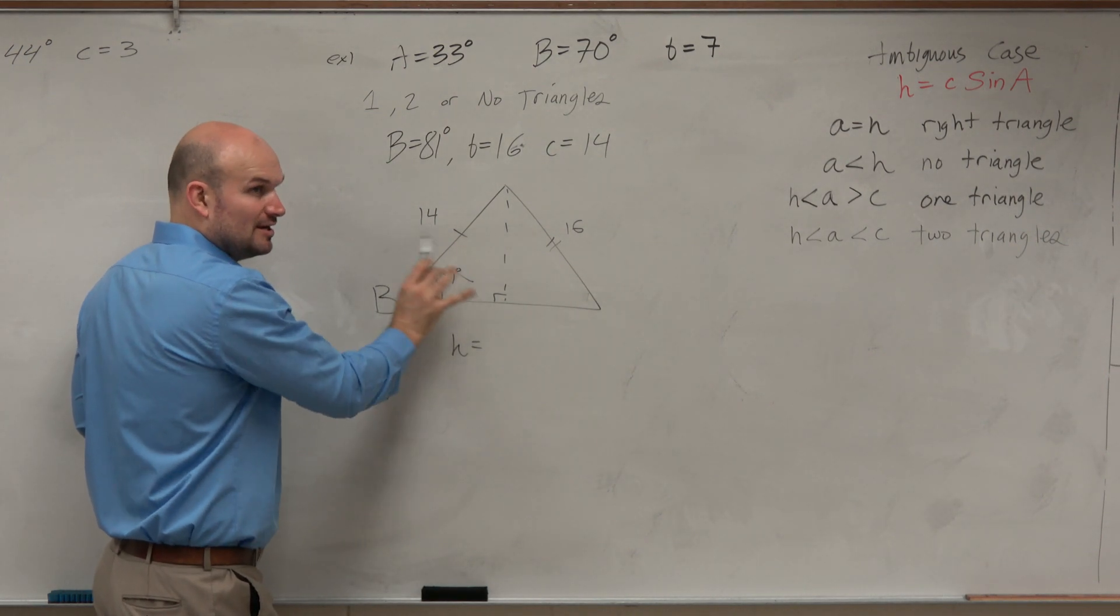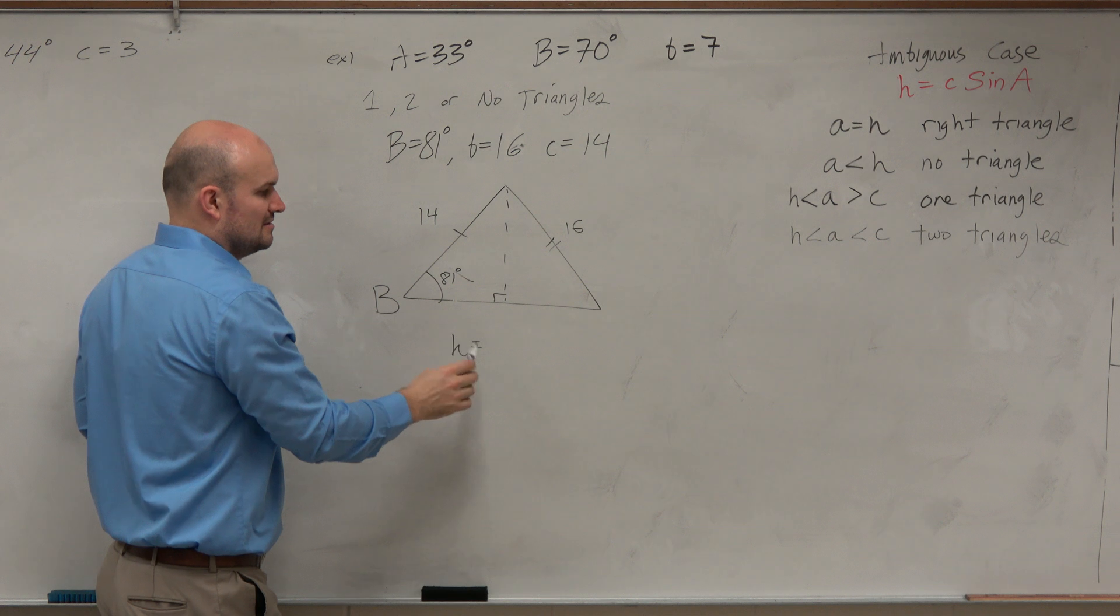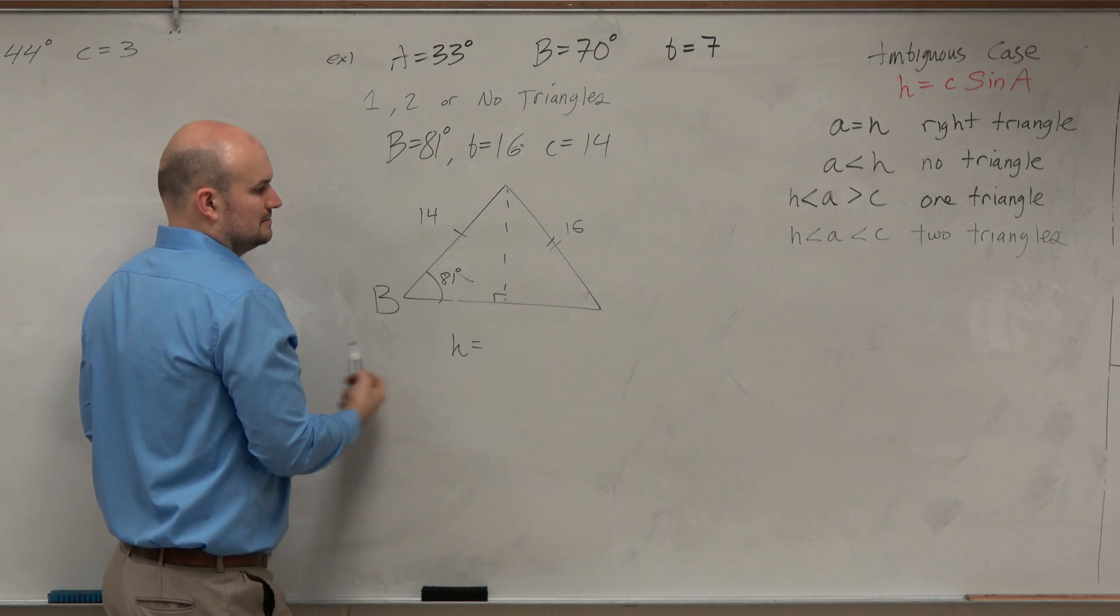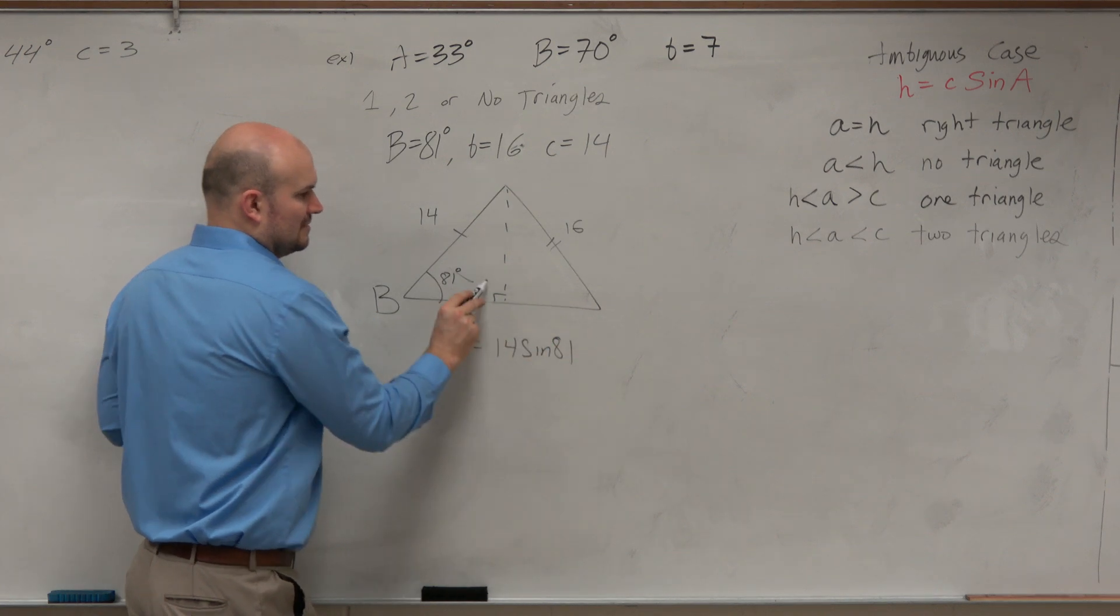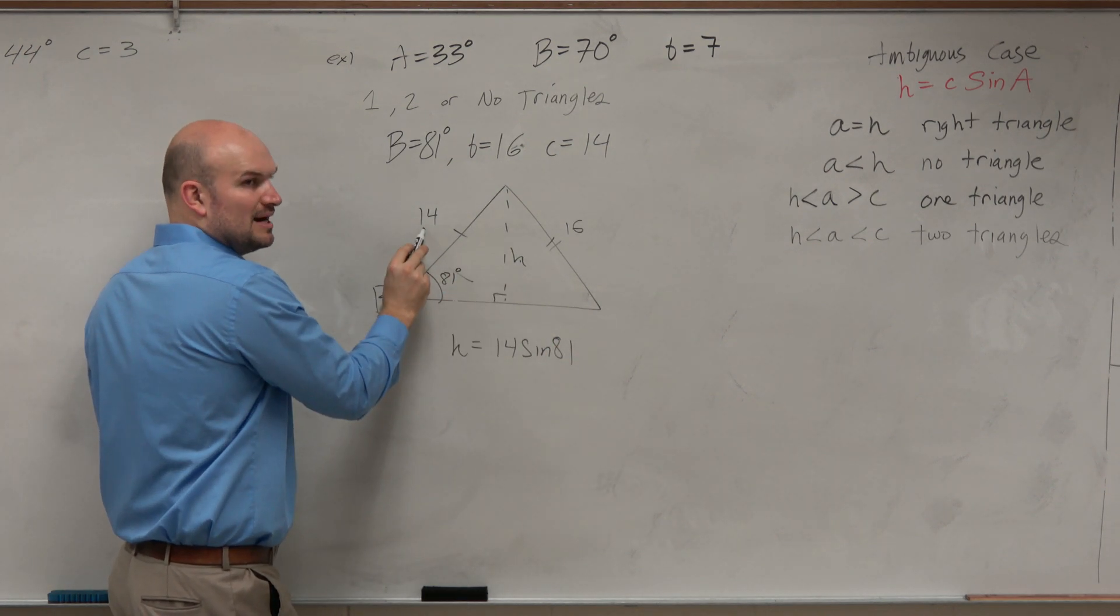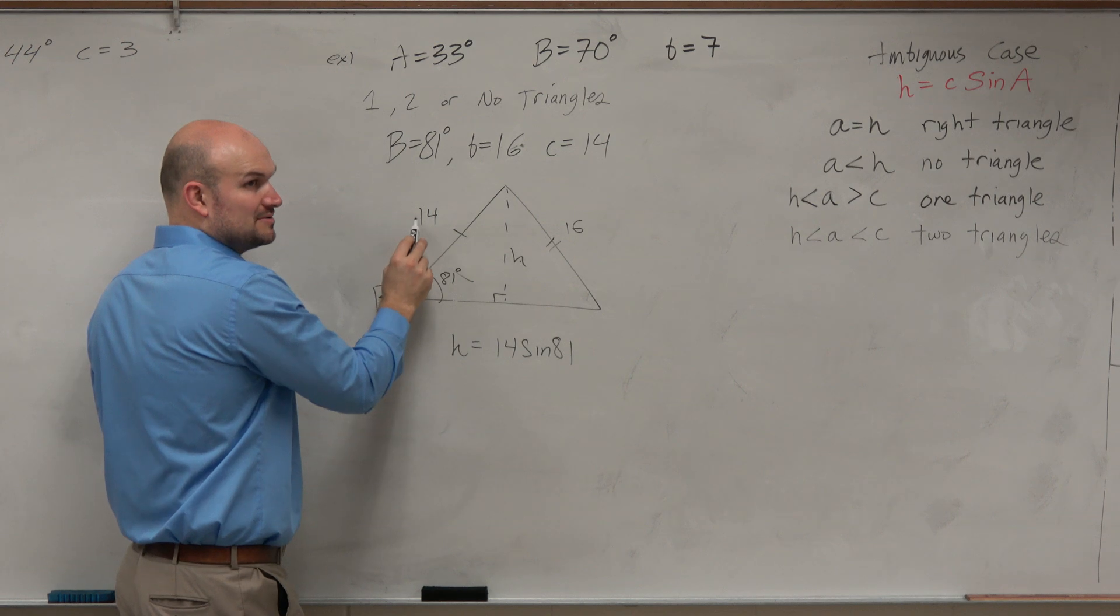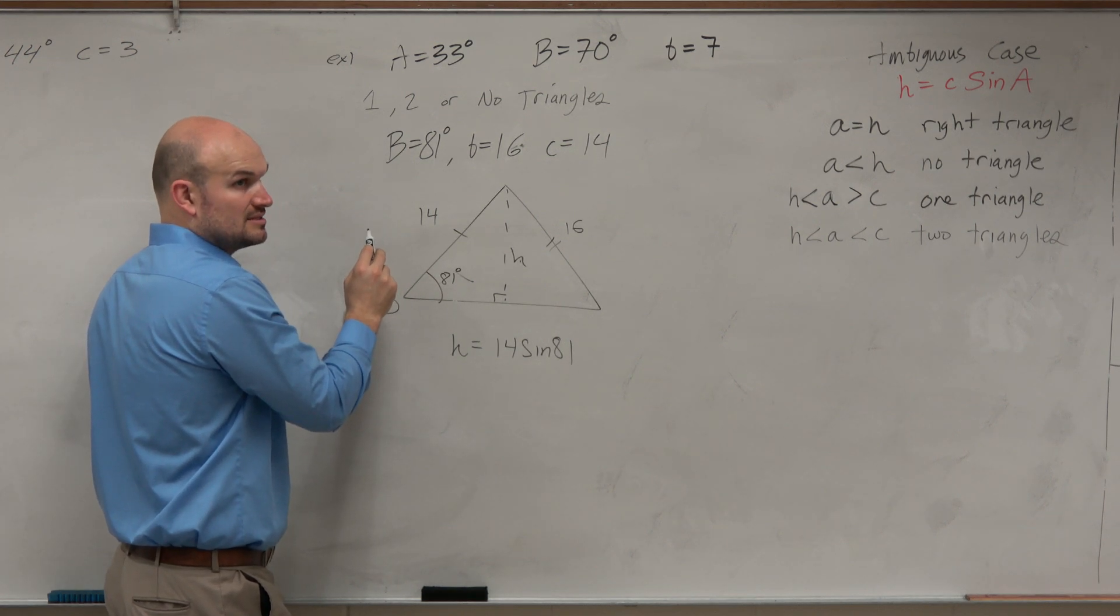Follow the form. Don't care about the variables, just follow the numbers. 14 times sine of 81. Opposite. Opposite over hypotenuse. Right? Does that make sense?